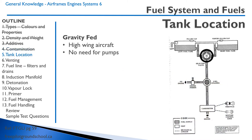Let's talk about fuel tank location. In high-wing aircraft, the fuel system is typically gravity-fed. The big advantage of gravity-fed fuel systems is you don't need a pump — it just naturally flows from the fuel tanks to the carburetor.